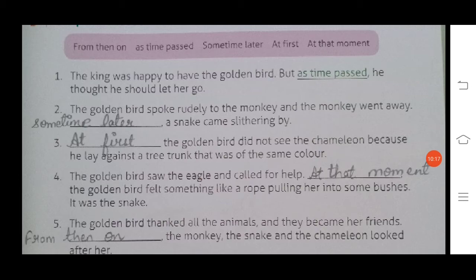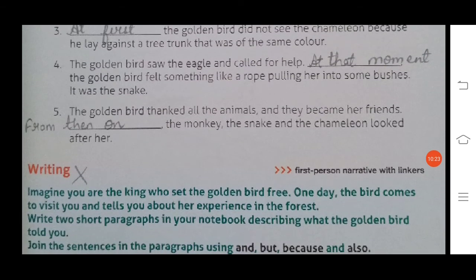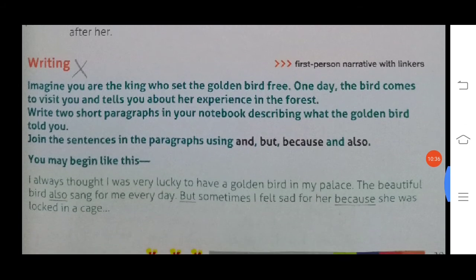Number five: the golden bird thanked all the animals and they became her friends. From then on, the monkey, the snake, and the chameleon looked after her.